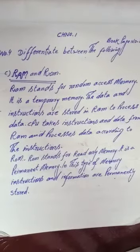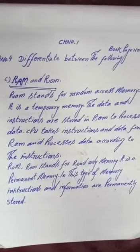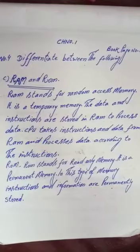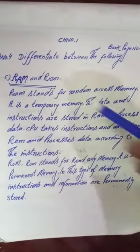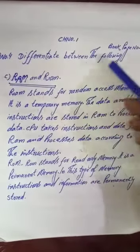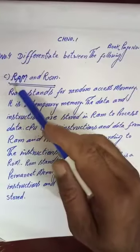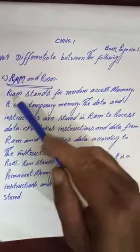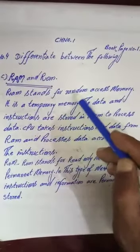بسم اللہ الرحمن الرحیم. I am a computer science teacher. آج ہم chapter number 1 کا question number 4 کریں گے: differentiate between the following. اس کا سی پوائنٹ ہے RAM and ROM. RAM stands for random access memory.